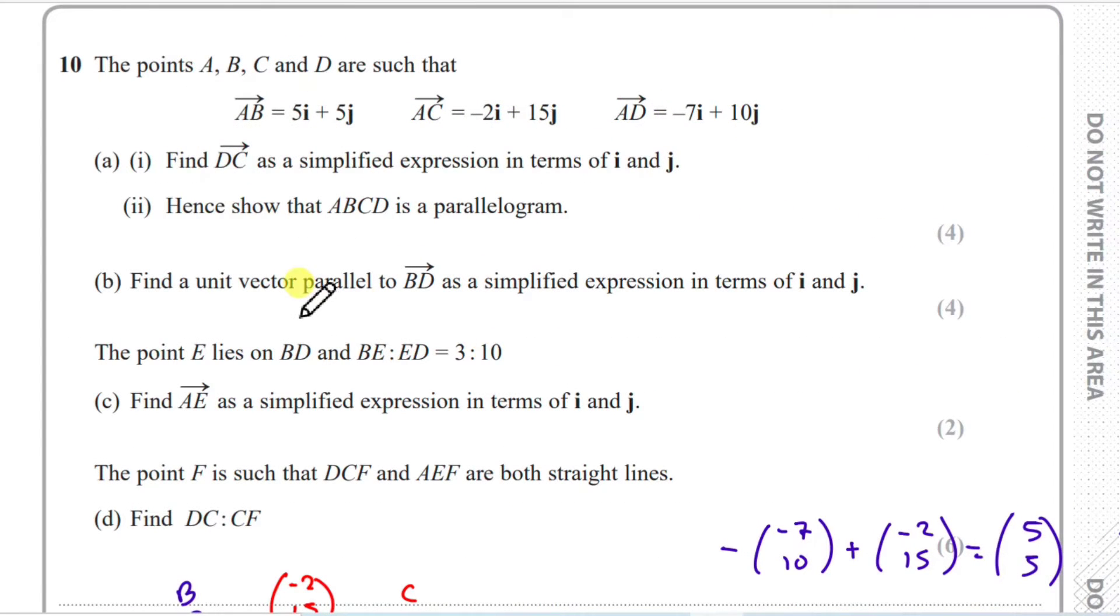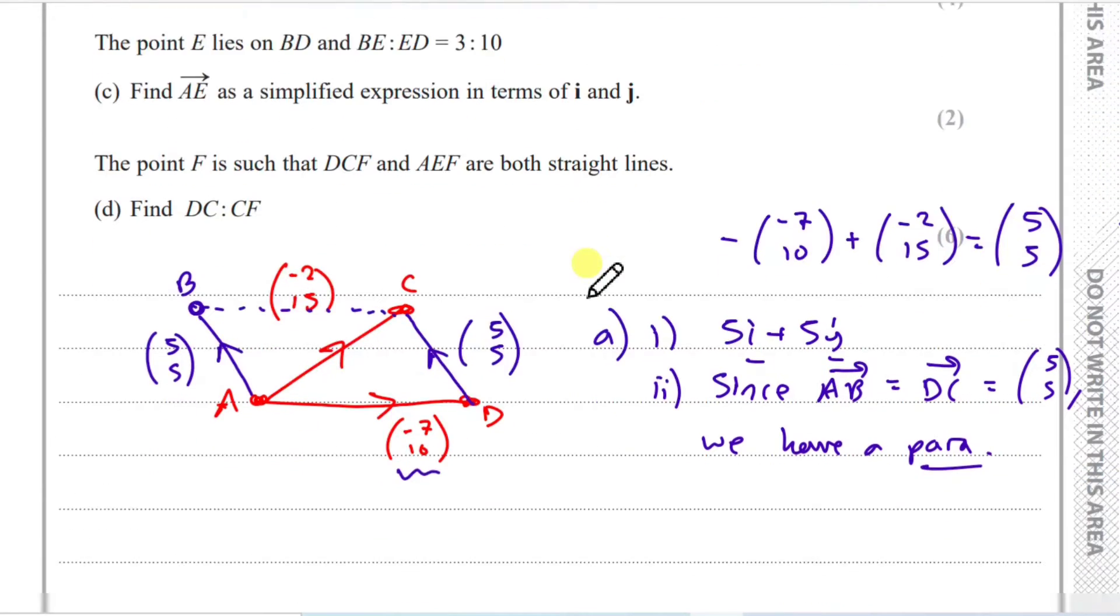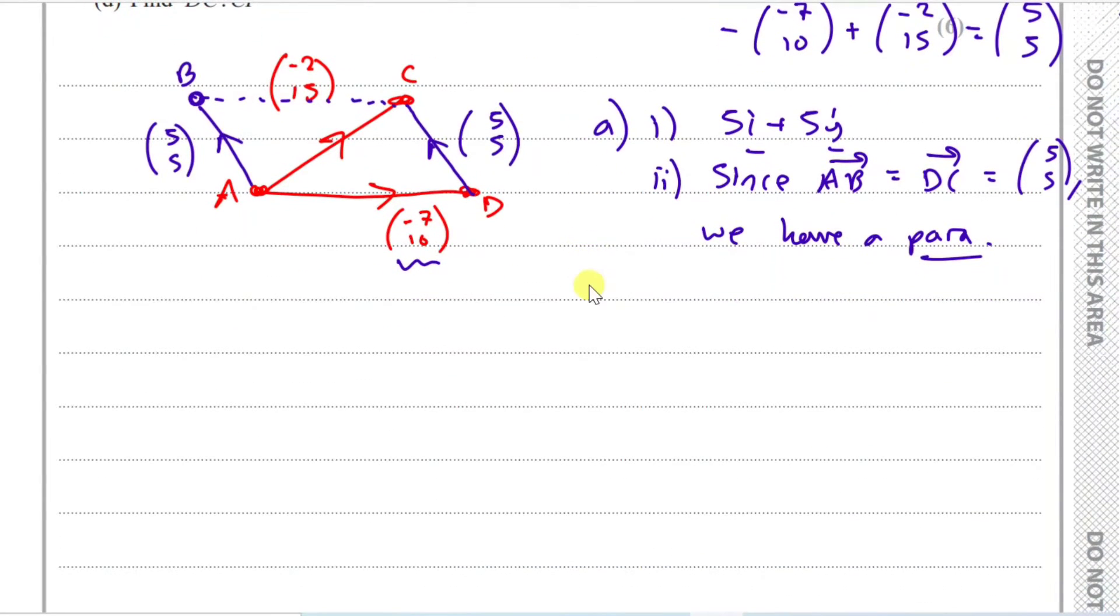So part B, find the unit vector parallel to BD as a simplified expression in terms of i and j. So we'll ignore the first part. This first part is actually not too bad. Let's firstly calculate BD. So part B, to get from B to D, we just follow the routes, starting from B that gets to D.